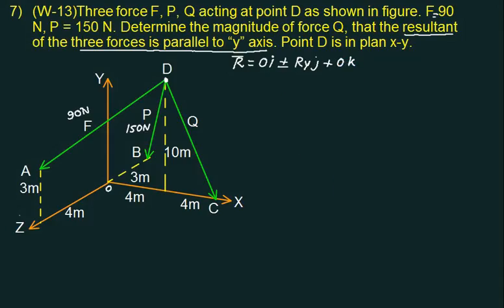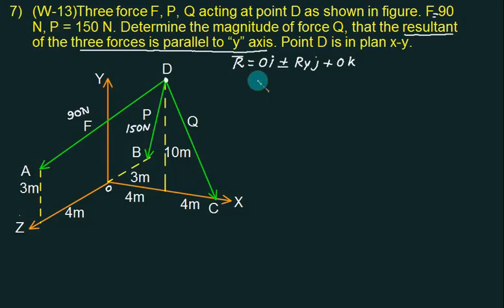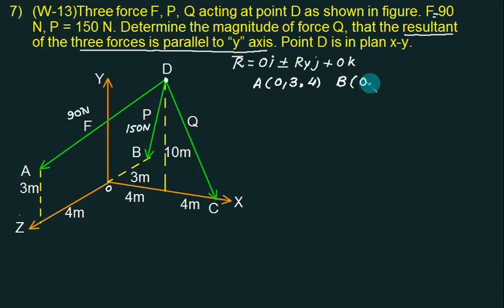First of all, we will find out the coordinates. This one is traveling above which axis? Z-axis. And from this point we are moving upward, so this one is parallel to positive Y. So positive Y is 3 and positive Z is 4. The coordinate of point D is lying on the negative Z-axis: (0, 0, −D).